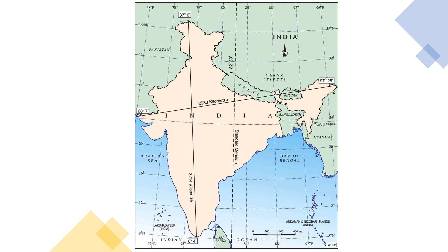India is the world's seventh largest country with an area of 3.28 million square kilometers. The Tropic of Cancer runs through about the central part of the country. South to north, it extends from 8 degrees 4 minutes to 37 degrees 6 minutes. The mainland of India stretches over 3,200 kilometers and lies entirely in the tropical and subtropical regions of the northern hemisphere.